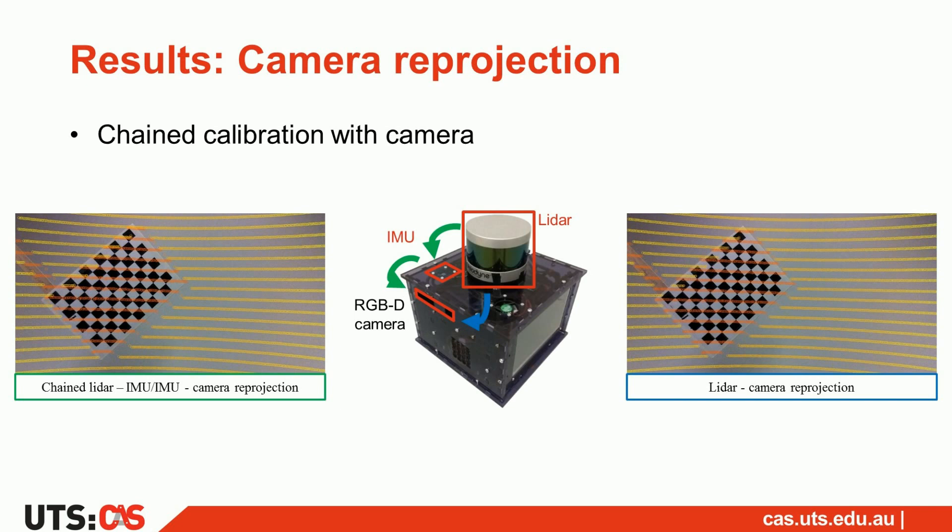One calibration on the left chains our IMU-LiDAR method with an IMU-camera calibration. The second on the right is a direct calibration between the LiDAR and the camera. We can visually see that both paths give relatively similar results.